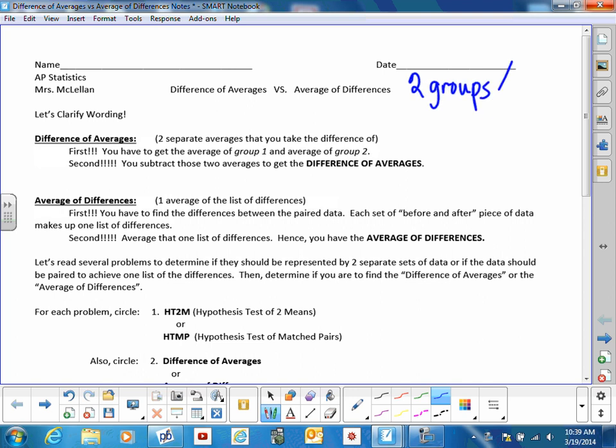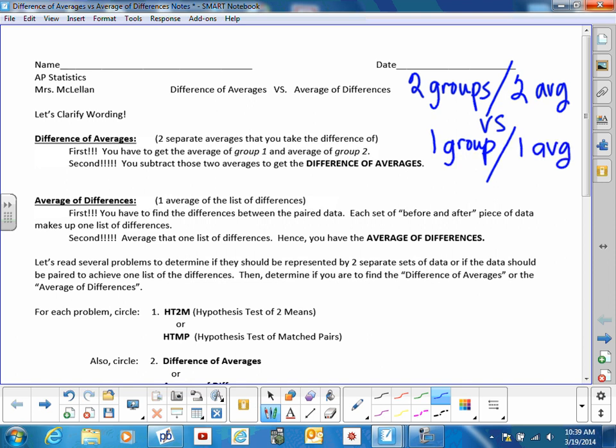You had two separate groups, so then you had two averages. Average of the men, average of the women, that kind of thing. Two separate groups. Versus what we learned yesterday, which was one group of people or one group of items, and then you first find the difference. They are matched up and you find the difference before minus after, or whatever.